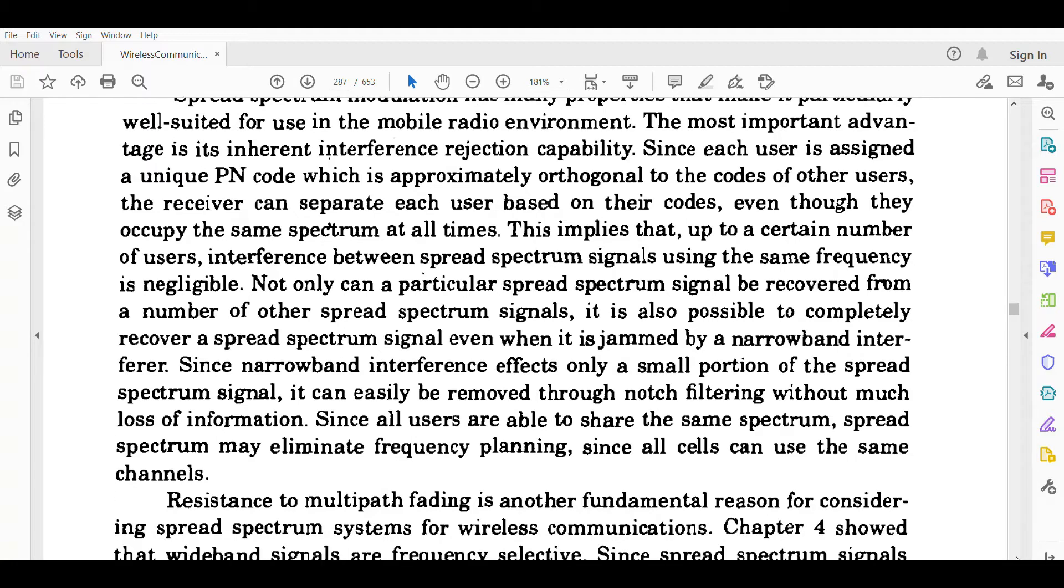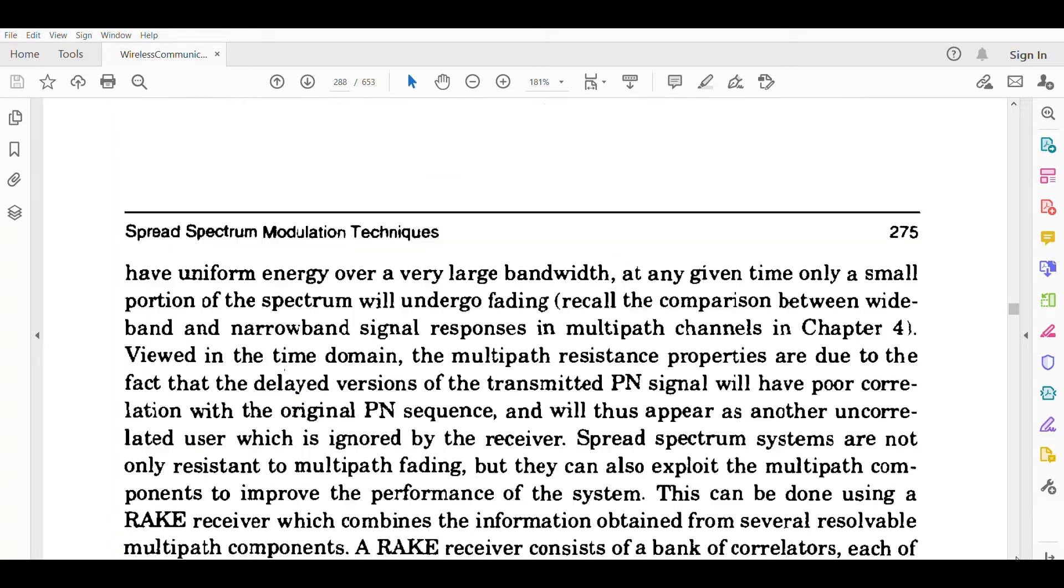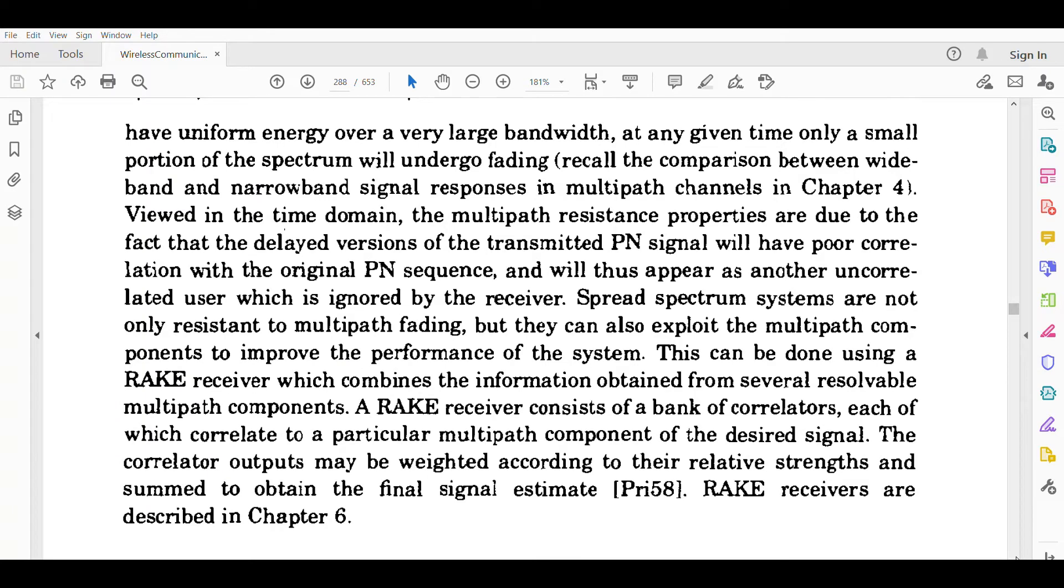Resistance to multipath fading is another fundamental reason for considering spread spectrum systems for wireless communication. Spread spectrum systems are not only resistant to multipath fading but they can also exploit the multipath components to improve the performance of the system. This can be done using the rake receiver, which combines information obtained from several resolvable multipath components. Rake receiver consists of a bank of correlators, each of which correlates a particular multipath component of the desired signal.